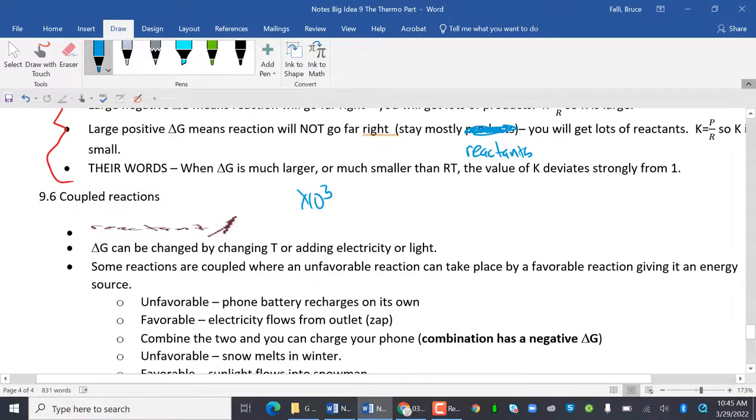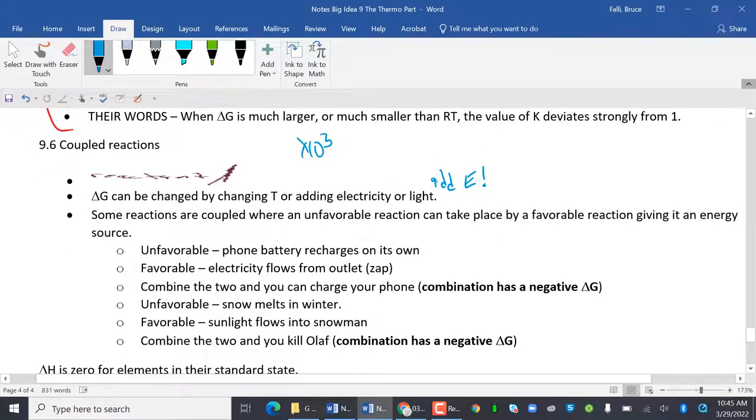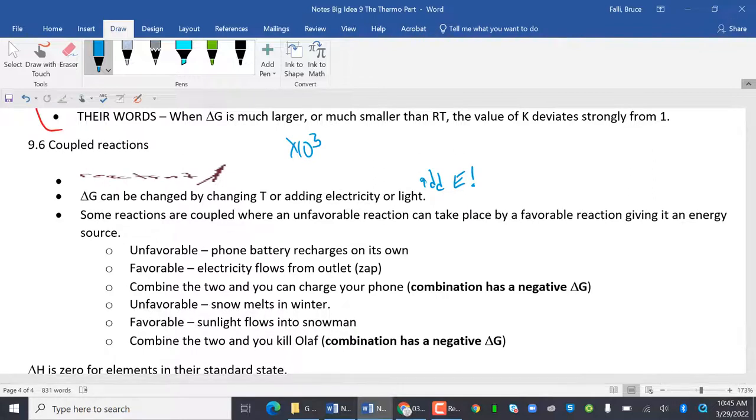Coupled reactions. Delta G can be changed by changing T or adding electricity or light. That means you are adding energy. Some reactions are coupled where an unfavorable reaction can take place by a favorable reaction, giving it an energy source. This works in your everyday life. Do you want to go with me to go shopping? Your mother. No, I don't want to. I'll take you out to eat. Oh, okay. So taking you out to eat is favorable. Going shopping with your mother is never favorable. Unfavorable: phone battery recharged on its own. Not going to happen. Favorable: electricity flows from the outlet. Combine the two and you can charge your phone. The combination has a negative G. So this one is positive delta G. And this one is favorable, which is a large negative delta G. So a positive delta G with a large negative delta G means you're going to end up with a negative.